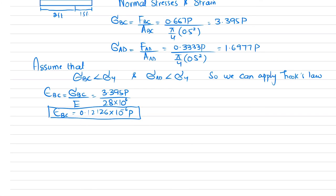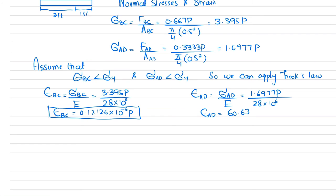Similarly, strain in wire AD = σ_AD / E = 1.6977P divided by 28 × 10⁶, and when you solve this, strain in wire AD comes out to be 60.6305 × 10⁻⁹ P.